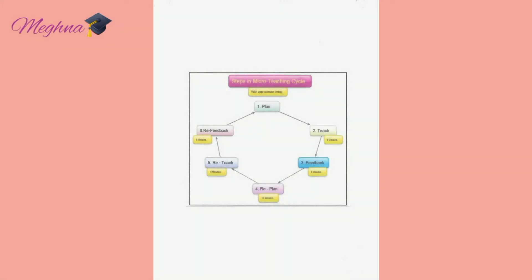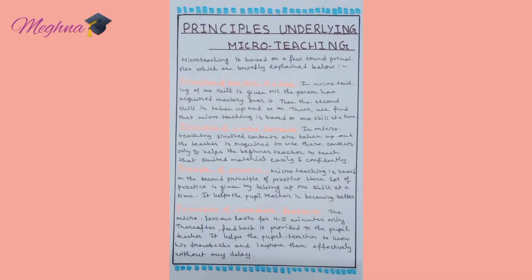There are eight principles underlying micro teaching. The principle of one skill at a time means the trainee must master one skill first before moving to the next. The principle of limited contents means a small portion of a unit is taught in one class. The principle of practice means micro teaching is practice so the teacher can conduct a class more efficiently. The principle of immediate feedback means feedback is given right after class so the trainee can improve without delay.